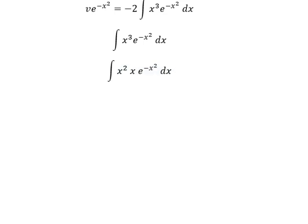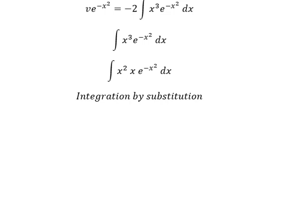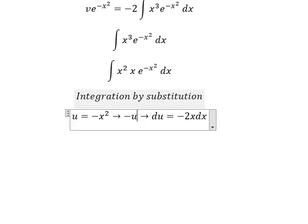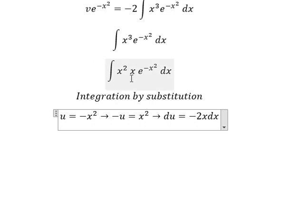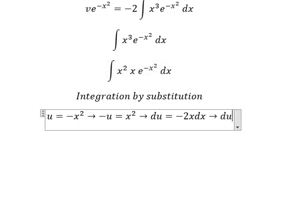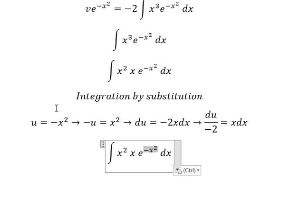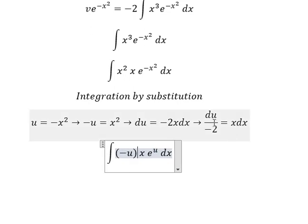Now we can use integration by substitution. I will put u equal to negative x squared. We need to do the first derivative of both sides, and we have du equal to negative 2x dx. Because we have positive x squared here, we put the negative side to the left, and we have negative u equal to x squared. Since we don't have negative 2, we divide both sides by negative 2. So negative x squared is replaced by u, x squared is replaced by negative u, and x dx is replaced by the corresponding expression.